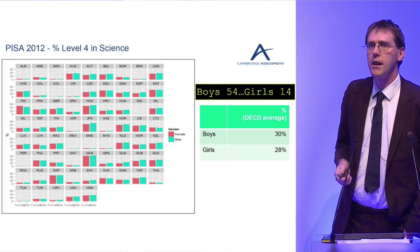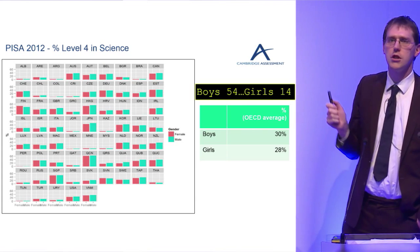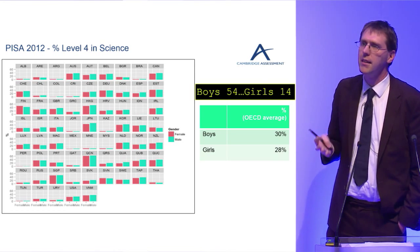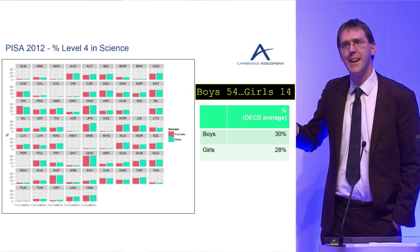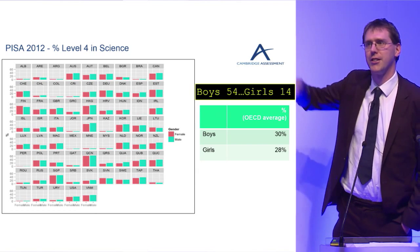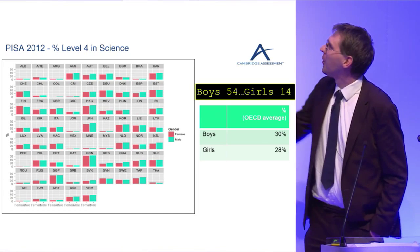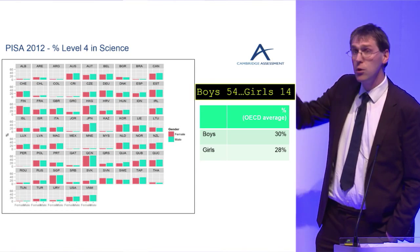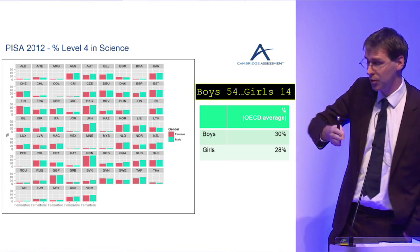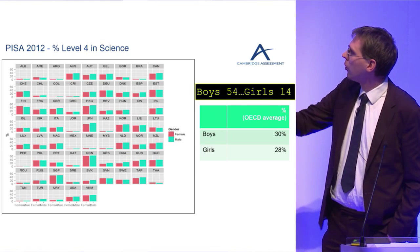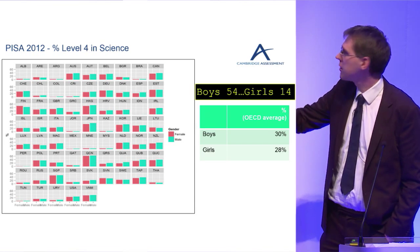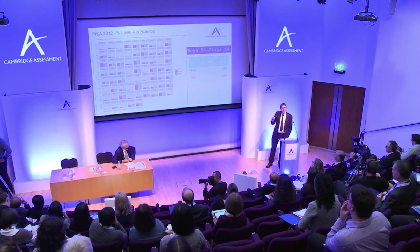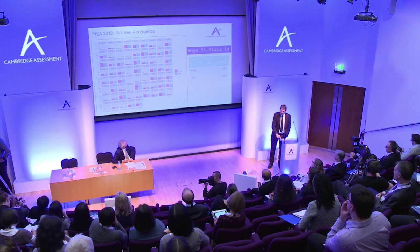Looking at attainment: the percentage of students achieving Level 4 in the PISA tests — very roughly equivalent to a GCSE grade B, quite a high level of achievement. For science, most countries show boys slightly outperforming girls at this level, though the story changes at different levels. Across the OECD, the average percentage difference is only 2%, so for science things are pretty even in PISA.